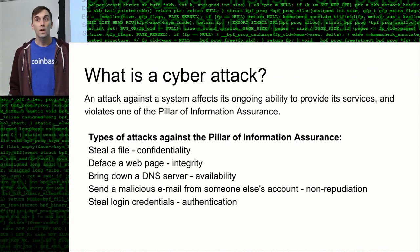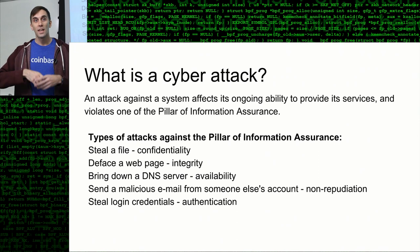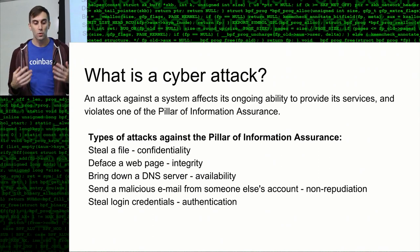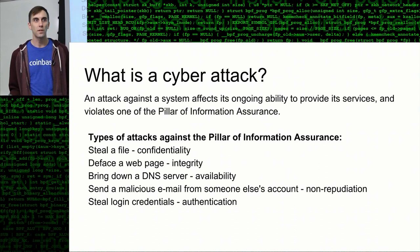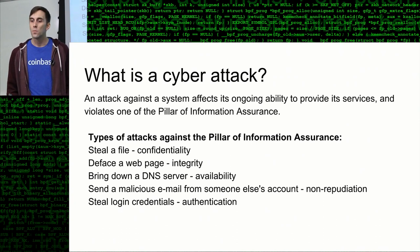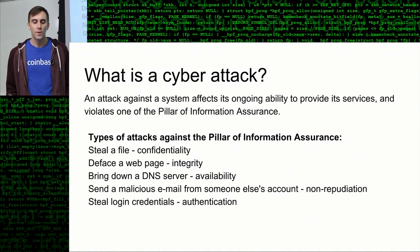Bringing down a DNS server — a DNS server is kind of like the address book of the internet; when you type in a URL like YouTube.com, a DNS server looks up the actual IP address and loads it — that actually happened in early 2017 from a bunch of Internet of Things devices attacking a DNS server, and the result was nobody could use the internet. That is a denial of availability. Sending a malicious email from someone else's account — when you can look like another user — is an example of violating non-repudiation.